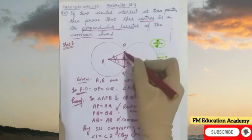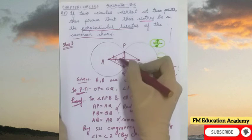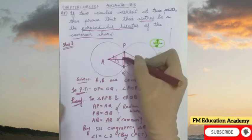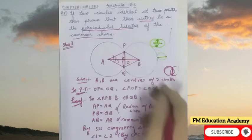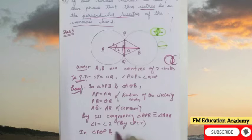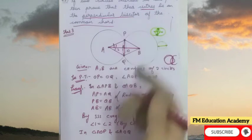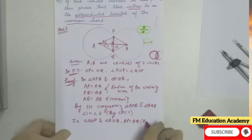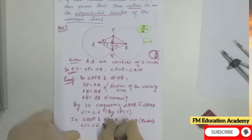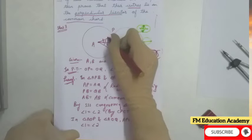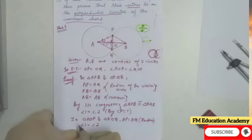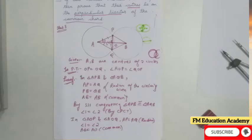Now I will consider triangle AOP and triangle AOQ to prove the angle is 90 degrees and that OP equals OQ. In triangle AOP and triangle AOQ: AP equals AQ (radius, given); angle 1 equals angle 2 (just proved by CPCT); and AO is common to both triangles. Therefore, by the Side-Angle-Side congruency rule, triangle AOP is congruent to triangle AOQ.